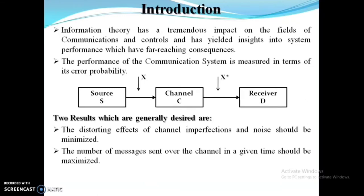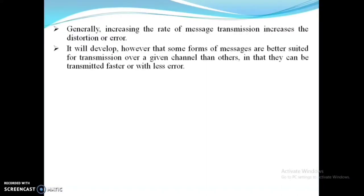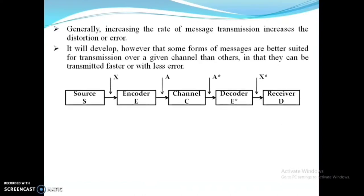The number of messages sent over the channel in a given time should be maximized — time is also a limiting factor. Within a given time we have to send the maximum number of messages. Hence, in order to resolve this problem we go for information theory of coding. Also, if we utilize the full channel capacity by increasing the transmission rate, noise and distortion also increase. For this reason we go for information theory of coding — we cannot neutralize the error, but we can detect and correct errors for efficient communication by introducing two additional blocks: an encoder and a decoder.